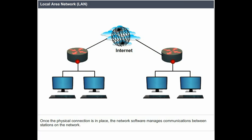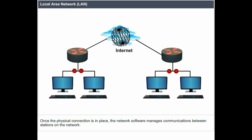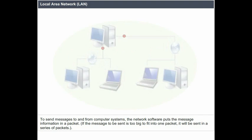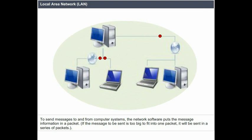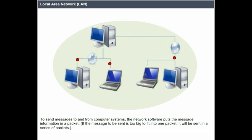Once the physical connection is in place, the network software manages communications between stations on the network. To send messages to and from computer systems, the network software puts the message information in a packet. If the message to be sent is too big to fit into one packet, it will be sent in a series of packets.